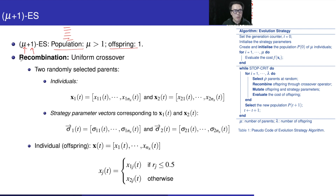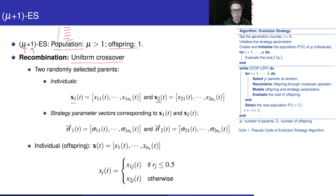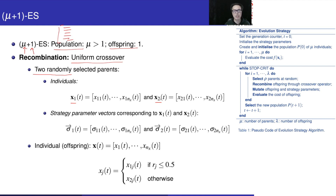Now we have recombination, and we will apply uniform crossover. When we use crossover, each time in the population we are going to pick x1 and x2. I want to clarify that x1 and x2 don't mean the first and second parents in fixed positions. What I mean is that each time I'm going to choose randomly two parents from this population. The first parent I label as x1, and the second parent I label as x2.